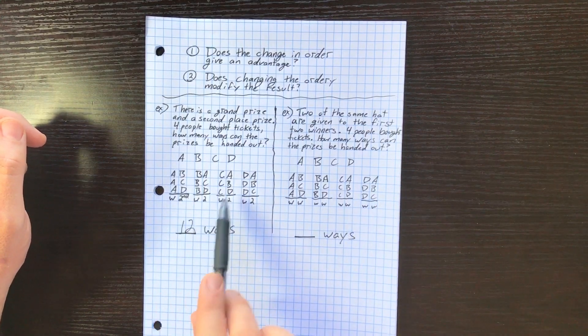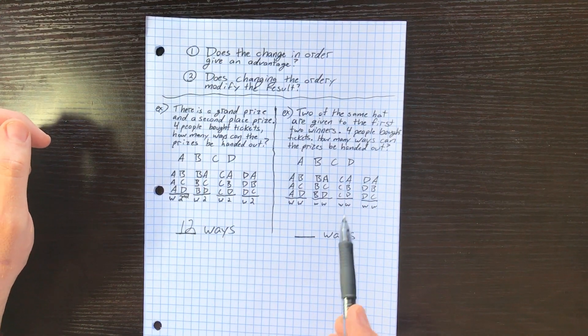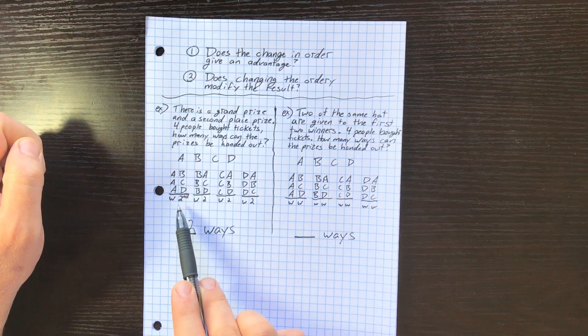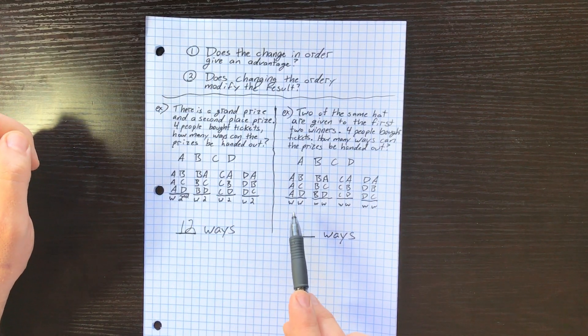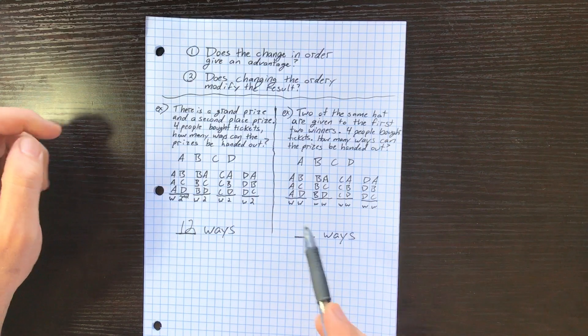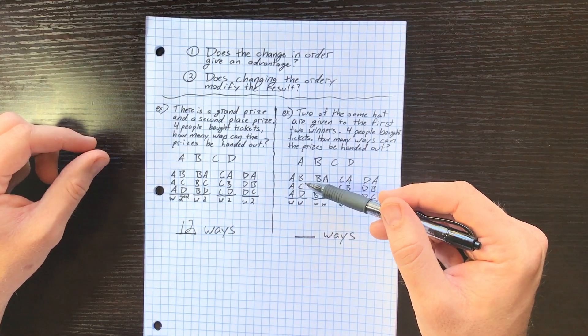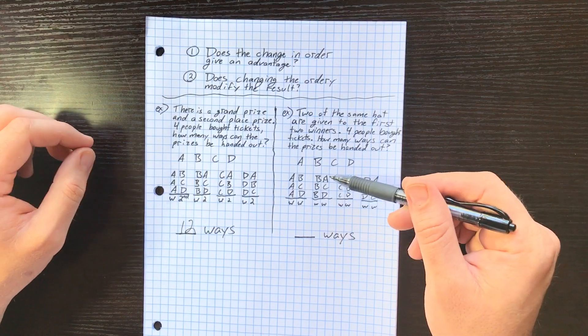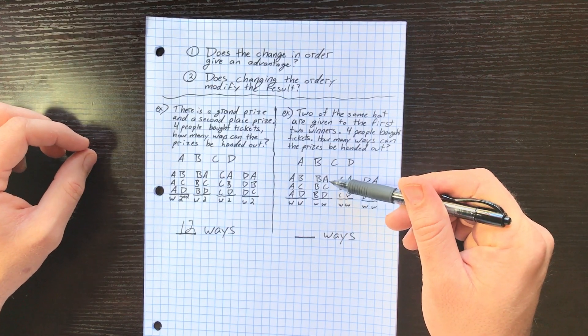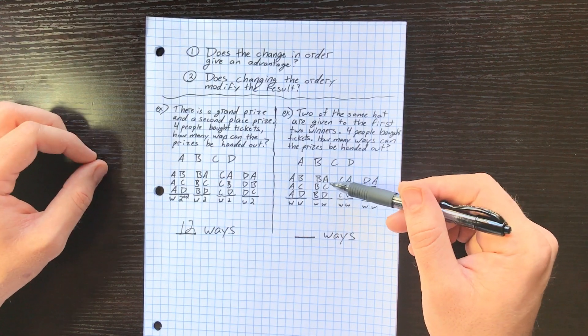So I have my list as well as the previous question, except it's not winner and second, it's just winner and winner. They get the same prize. So ask yourself: if A and B both win, they both get a hat, or whatever. Is that a different result than B and A winning?